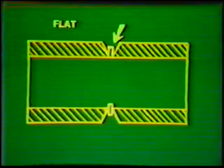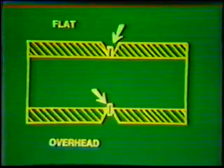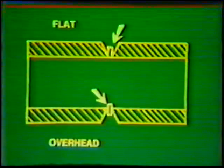Pipe joints prepared with a consumable insert are easier to weld, since the manipulation of a filler metal rod is not required. When a K or G insert is used, the insert is sometimes allowed to extend above the root face in the flat portion of the pipe and below the root face in the overhead portion. This procedure compensates for sagging of the molten metal due to gravity.